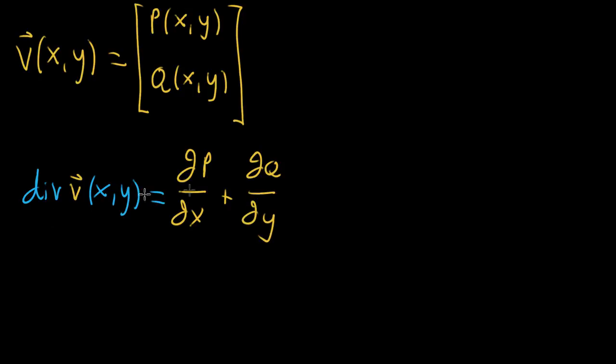And there's actually another notation for divergence that's kind of helpful for remembering the formula. And what it is, is you take this nabla symbol, that upside down triangle, that we also use for the gradient, and imagine taking the dot product between that and your vector valued function.